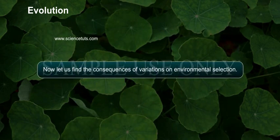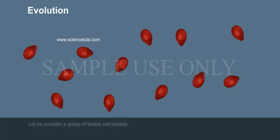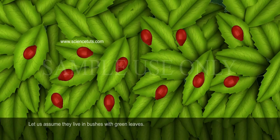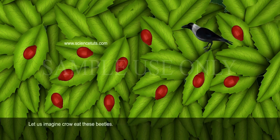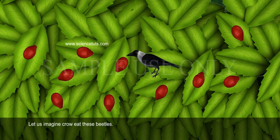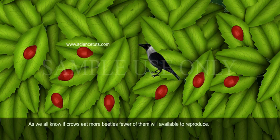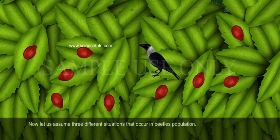Now let us find the consequences of variations on environmental selection. Let us consider a group of 12 red beetles. Let us assume they live in bushes with green leaves. The population of beetles grows by sexual reproduction and can produce variations. Let us imagine a crow eats these beetles. If crows eat more beetles, fewer of them will be available to reproduce. Now let us assume three different situations that occur in the beetle population.